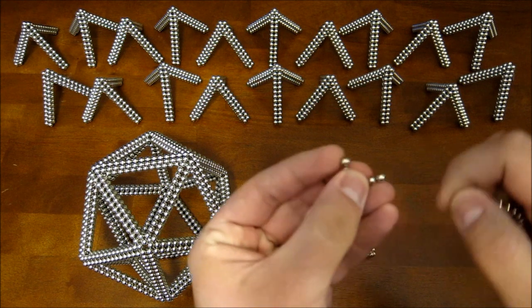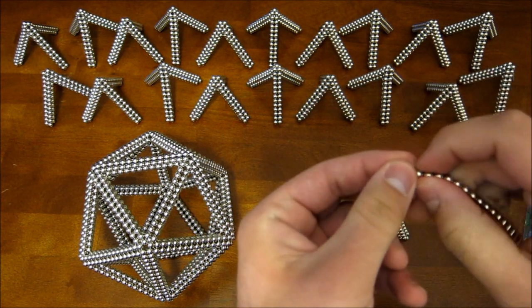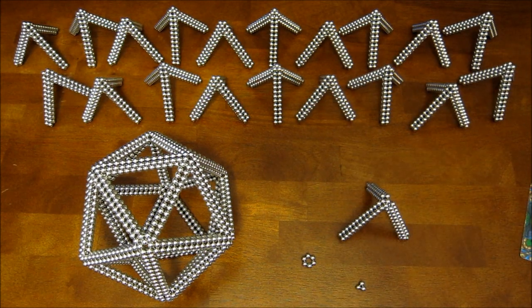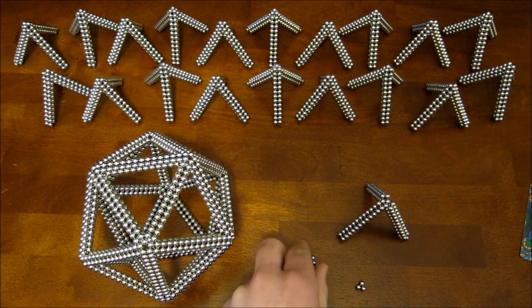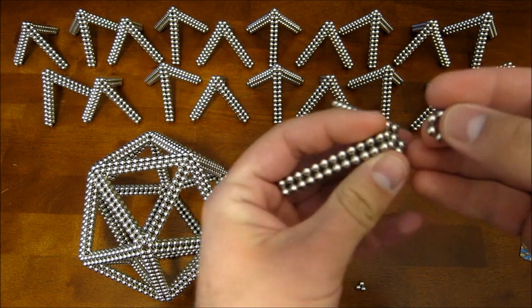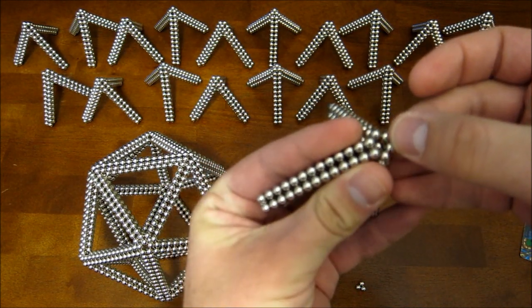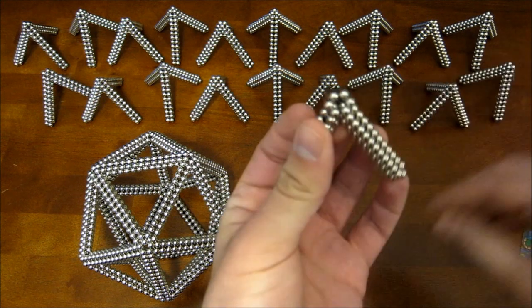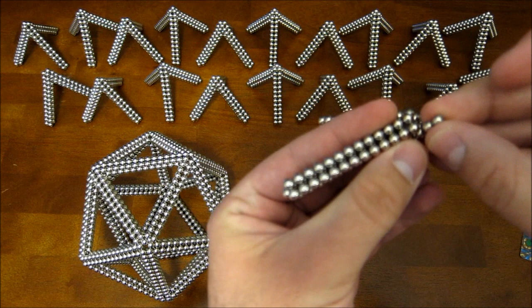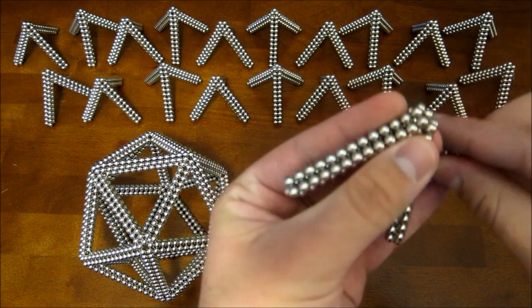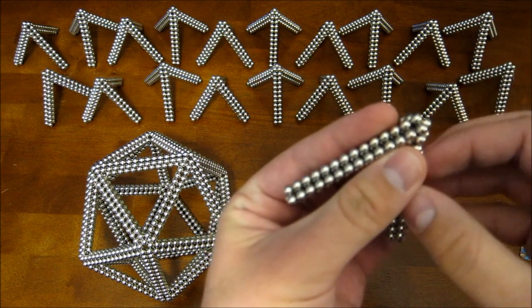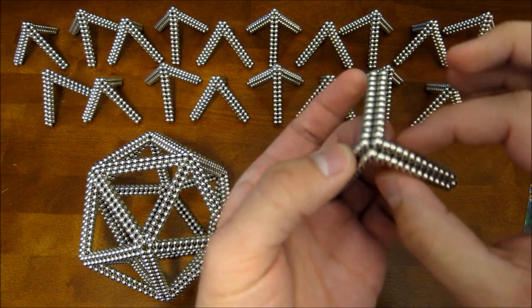Now the next thing you're going to need is a hex ring there and a little triangle. And what you want to do is add the hex ring onto the top like that. And then you want to add the triangle like that on top. So you end up with this.